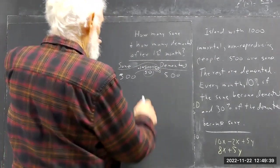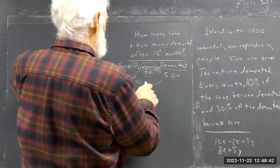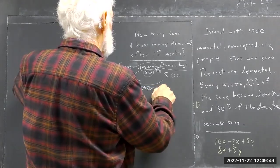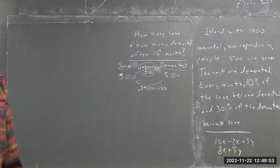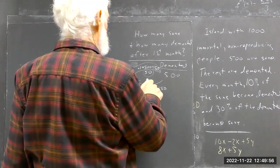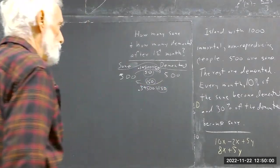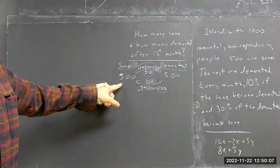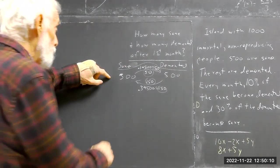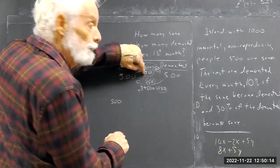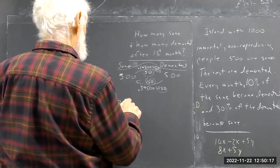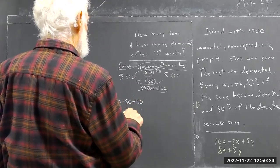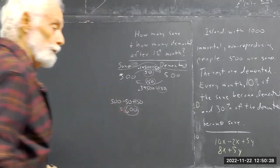Then 30% of the demented come back into the sane category. 0.3 times 500 is 150. So how many sane people am I going to have in the next month? I have 500 to start, I'm losing 50, I'm gaining 150 — so now I have 600 sane people.